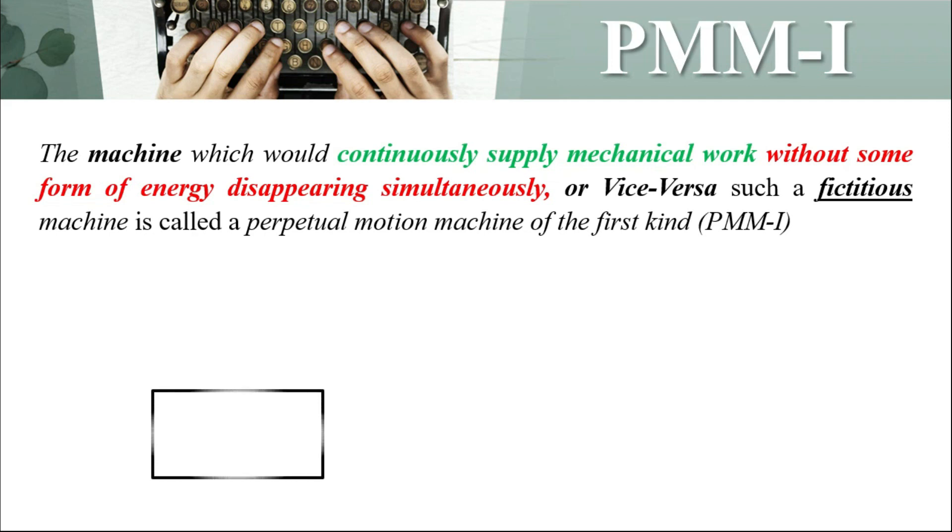Let us take an example. Let us say we have a machine which is producing a certain amount of work continuously such that there is no input to it. This type of machine will be called a perpetual motion machine of first kind, or vice versa is also possible.